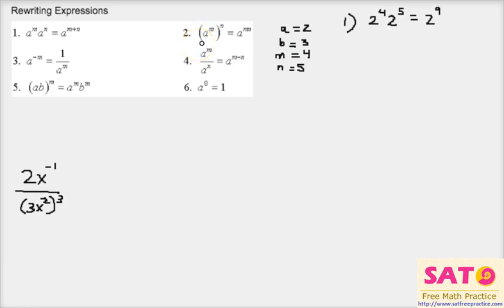For the next one, a to the m power to the n power. So it's basically (a to the m) to the n power is m times n. So if we do that, 2 to the fourth power to the fifth power is 2 to the 4 times 5 power, which is 20.